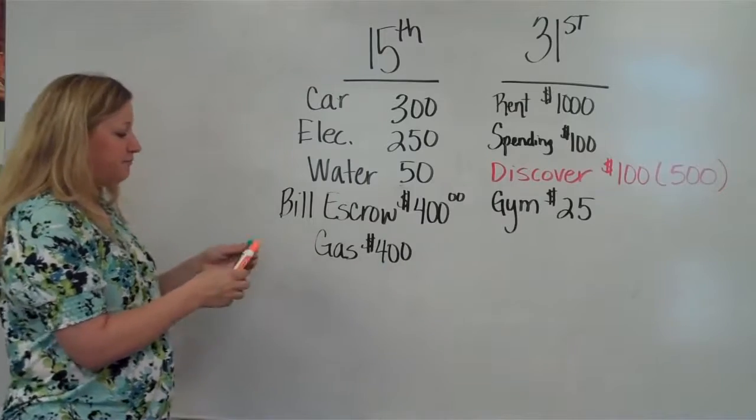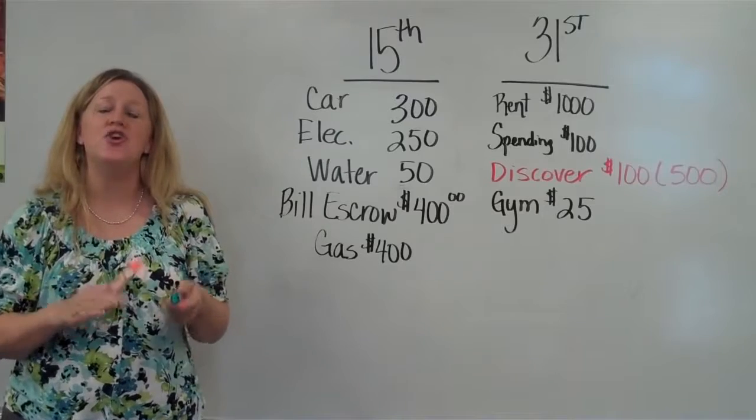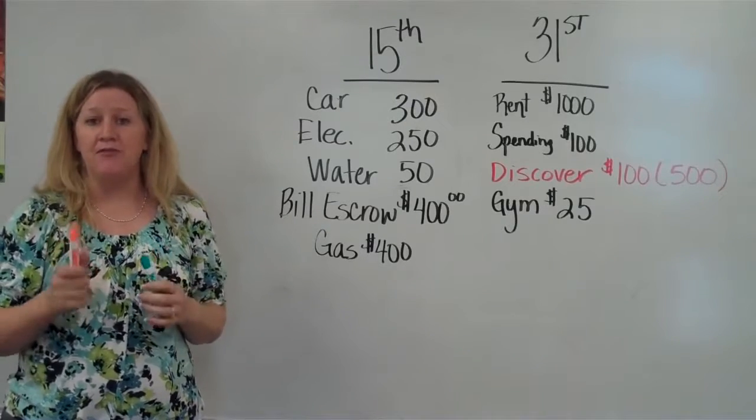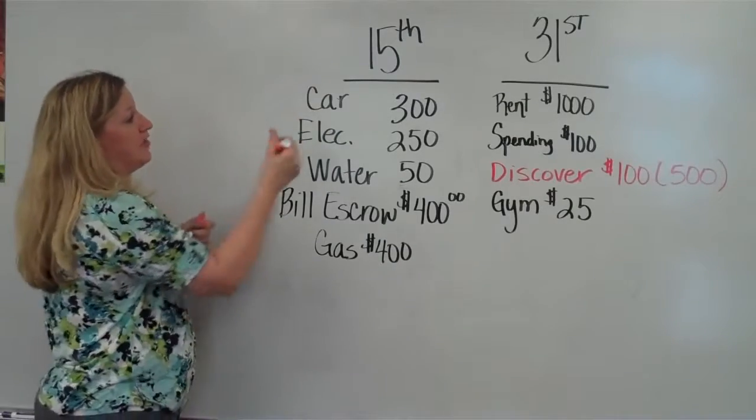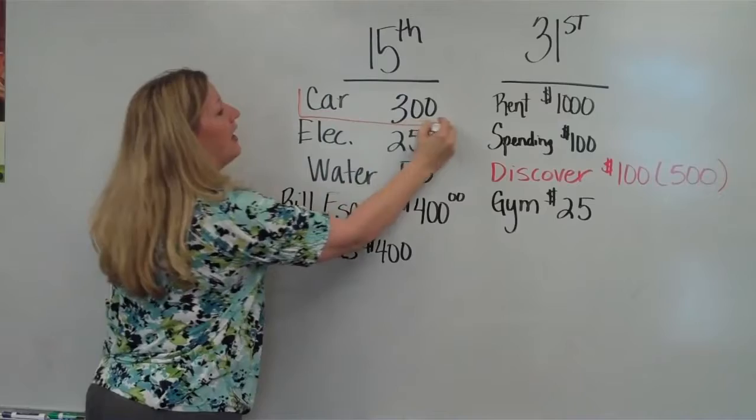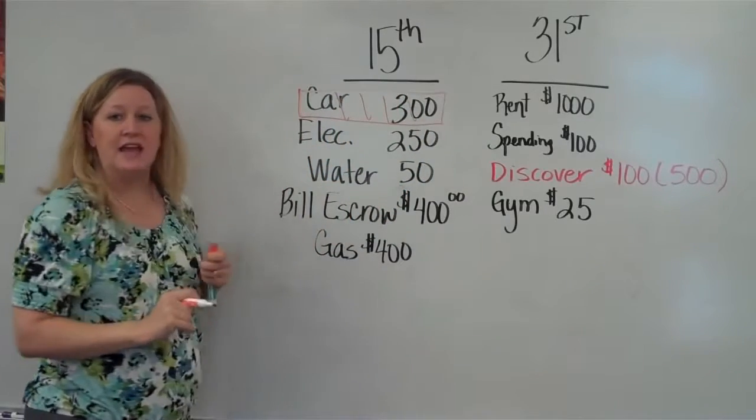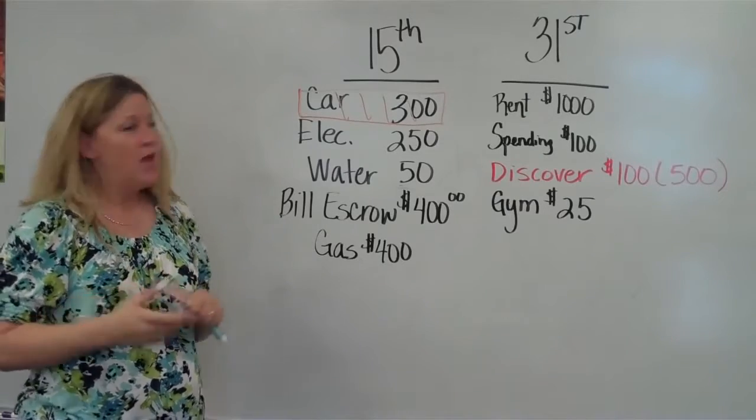Now secondly, I'm just going to use a couple different markers here to show this. Highlight your budget with different colors so you know what you're doing with the money. For example, let's say I pay a bill out of the 15th, the car payment. I can highlight that in orange to show that money has already been taken out of my checking account on the 15th and it's a done bill. I've already paid it.